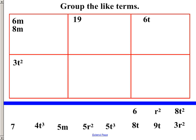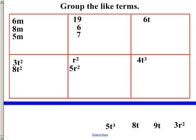Okay, now that you've done it, I'm going to show you my answers. I would put the 6 here, let's see, r squared, 8t squared, 7, 4t cubed, 5m, 5r squared, 5t cubed, 8t, here we go, 9t, and 3r squared. Check yours and see how you did.